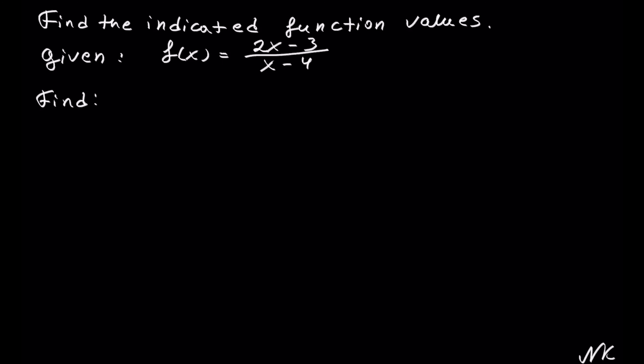Here we're going to find the indicated function values of a given function f of x that is equal to 2x minus 3 out of x minus 4.